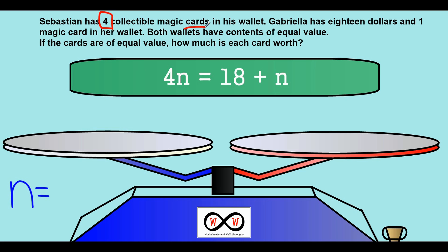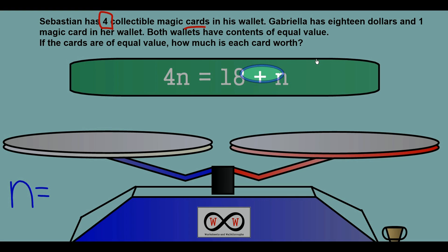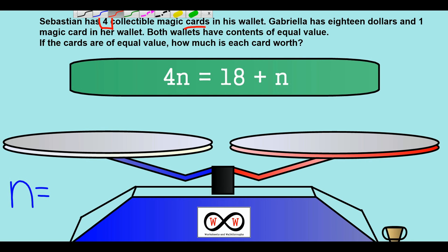Where did we get the values for the right side of the equation? On the right side we have 18 plus n. Since the left side represented Sebastian's wallet, the right side represents Gabriela's wallet. Think back to the problem: Gabriela has $18 and one magic card in her wallet. So in the equation, 18 represents the dollars and n represents the magic card and its value.